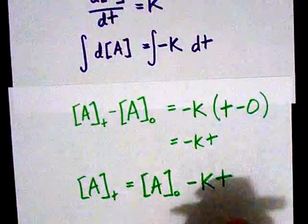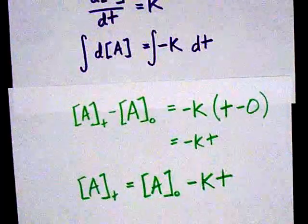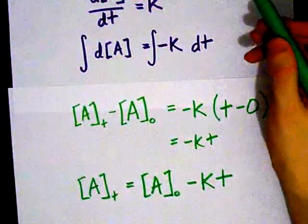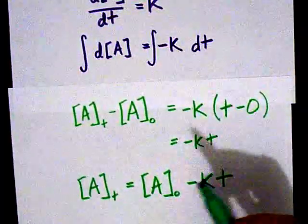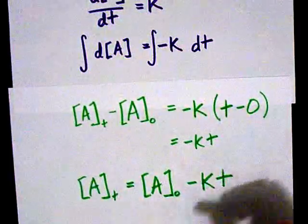So, if I'm given my initial concentration, my rate constant, and the amount of time that goes by, and the fact that it's a zero order reaction, I can get my concentration at that time t.